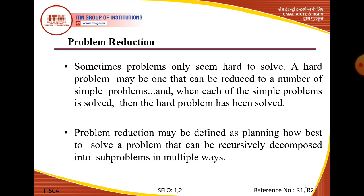Matrix multiplication को nth terms तक अगर हम देखें — दो matrices को multiply करना आसान लगता है, but computer science में जब हम matrices में data लेके calculations करते हैं तो यह big और complex process है। इस big और complex process को हम problem reduction के through solve करते हैं। Problem reduction में जो भी एक big problem है उसको small problems में divide करते हैं, फिर उन small problems को compute करके merge करके big problem का solution achieve करते हैं।